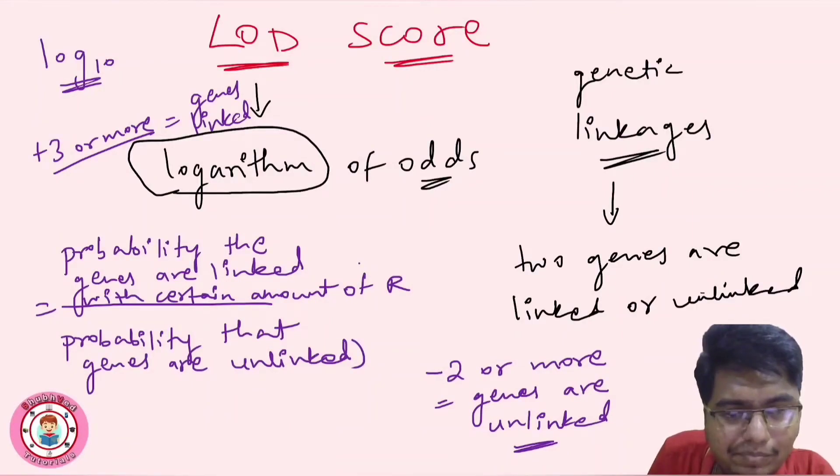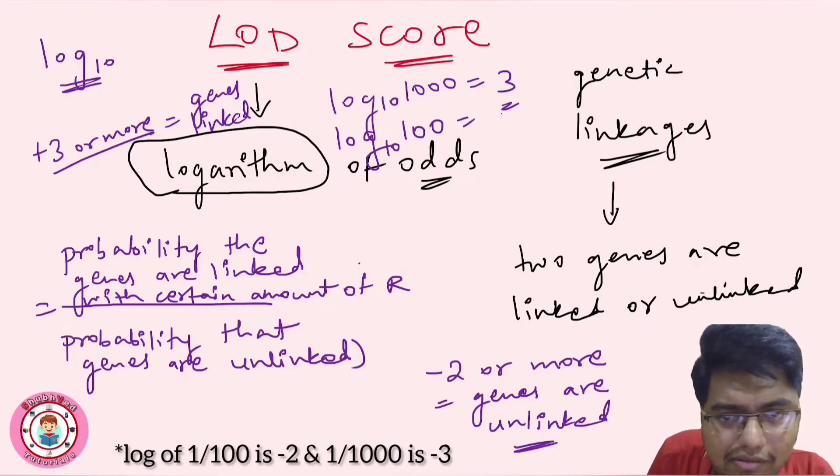But what is this plus 3? Plus 3 or we can say log of 1000 is 3. So like this we calculate the values. As well, if we say log of 100, then here we can say this is 2.